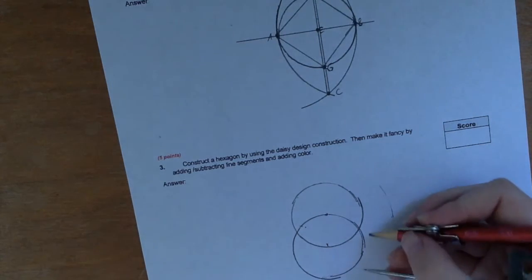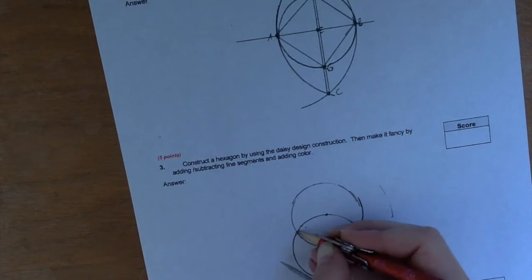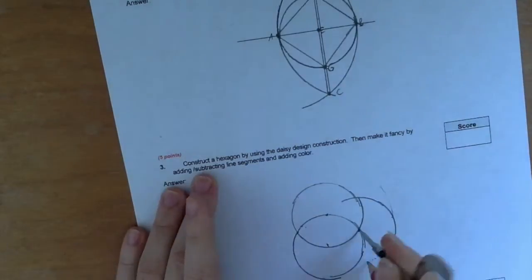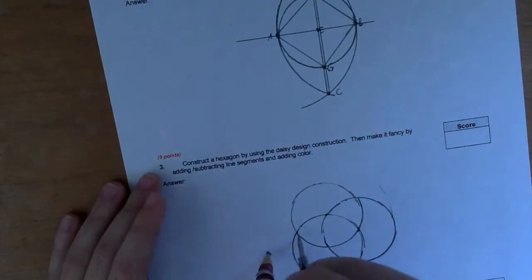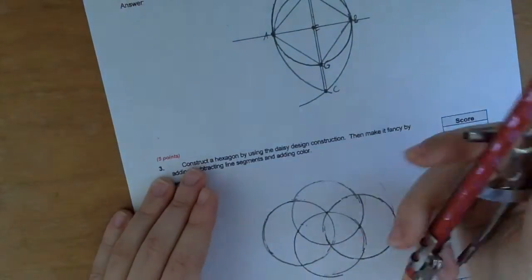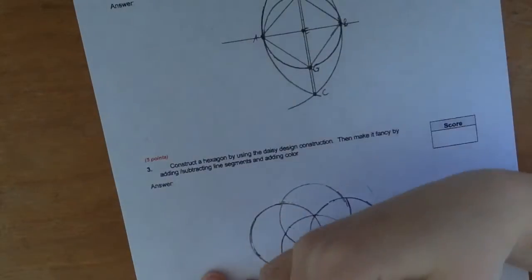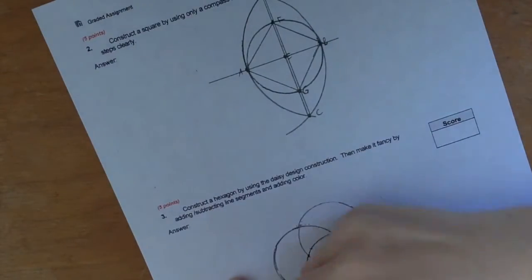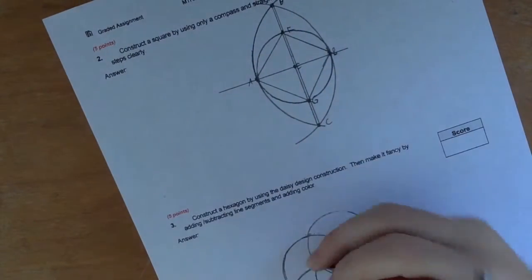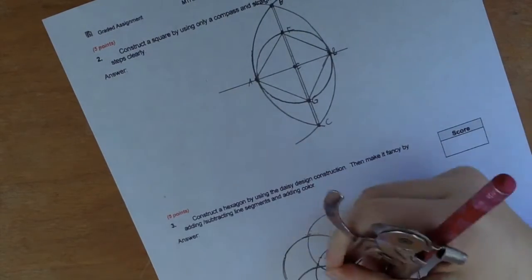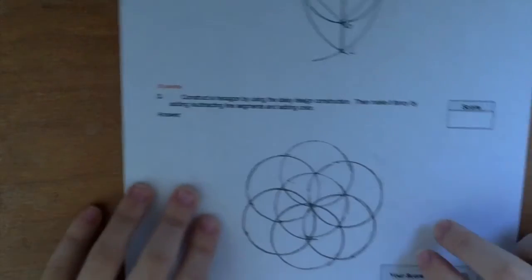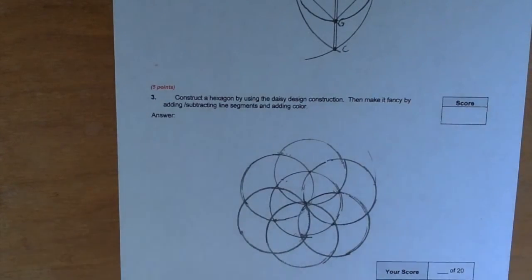So now you've got more points, you've got this one and this one. Now you have a beautiful daisy on your paper. Now what you can do with this is you can construct hexagons.